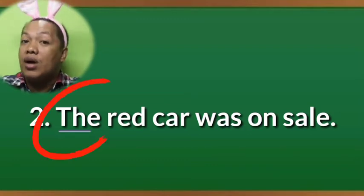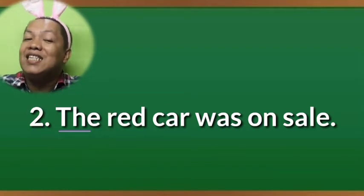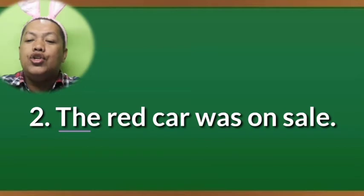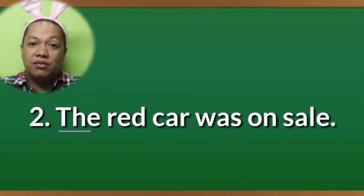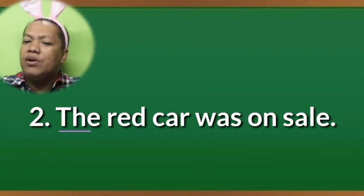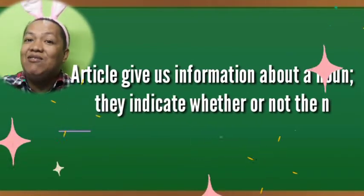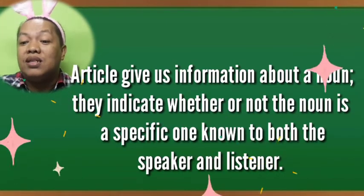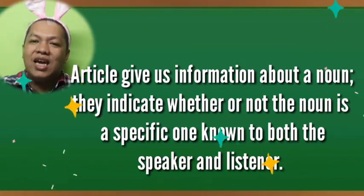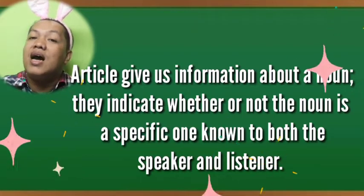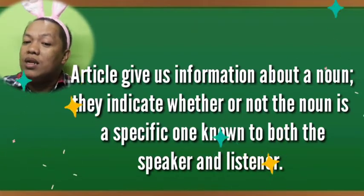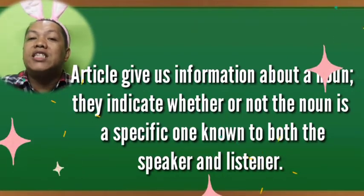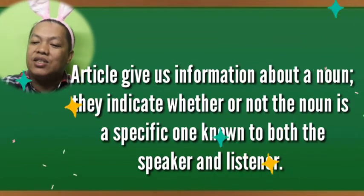The underlined word in sentence two is the article 'the.' In sentence two, the listener knows which car the speaker is talking about. Also remember that articles give us information about a noun — articles indicate whether or not a noun is a specific one known to both the speaker and the listeners.